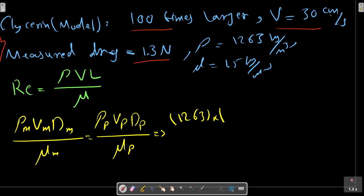The density multiplied by the velocity in meters per second, and the diameter of the copepod is 1 mm for the prototype. For the model,